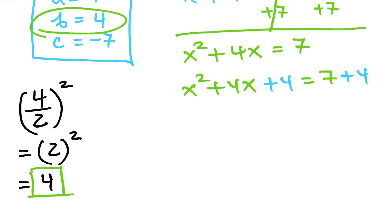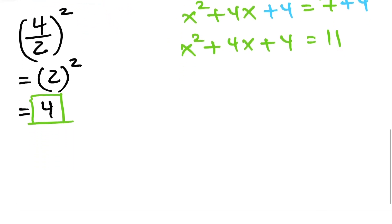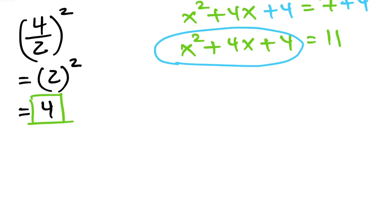We added 4 to both sides. On the left side, we don't want to simplify yet — leave it as x² + 4x + 4. On the right side, 7 + 4 = 11. So now we have x² + 4x + 4 = 11. You can use the diamond method to factor the left-hand side.